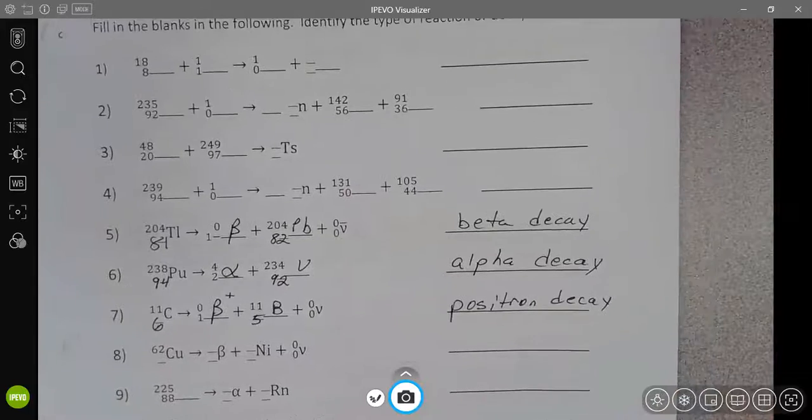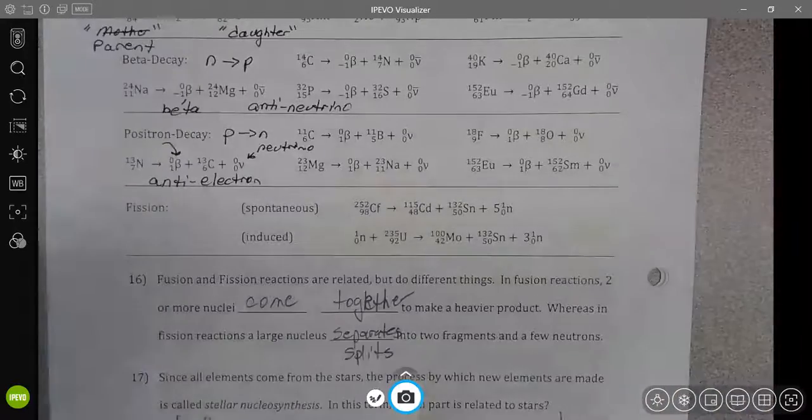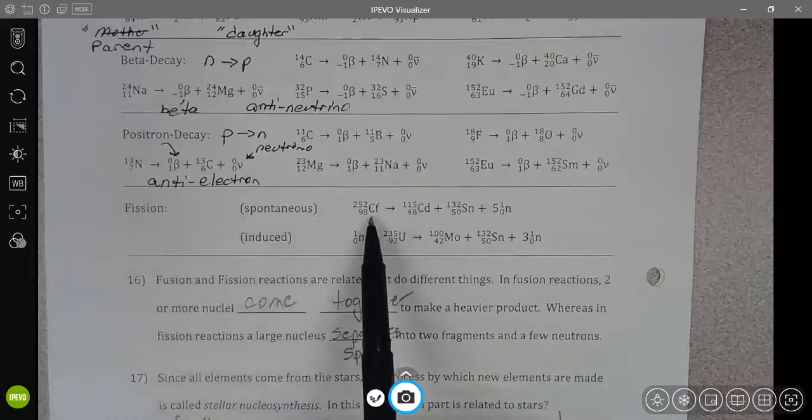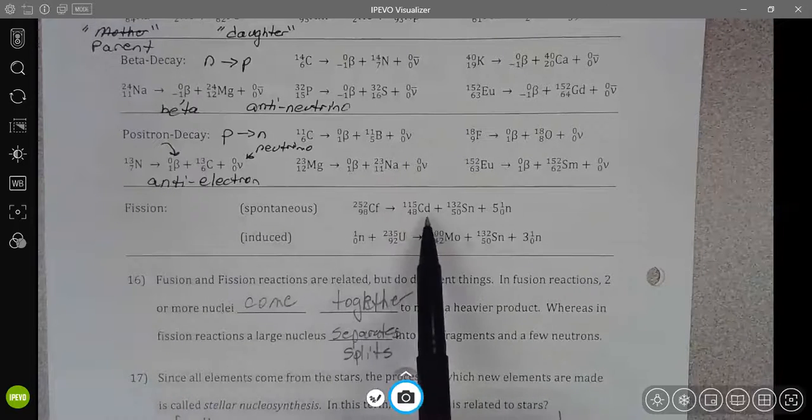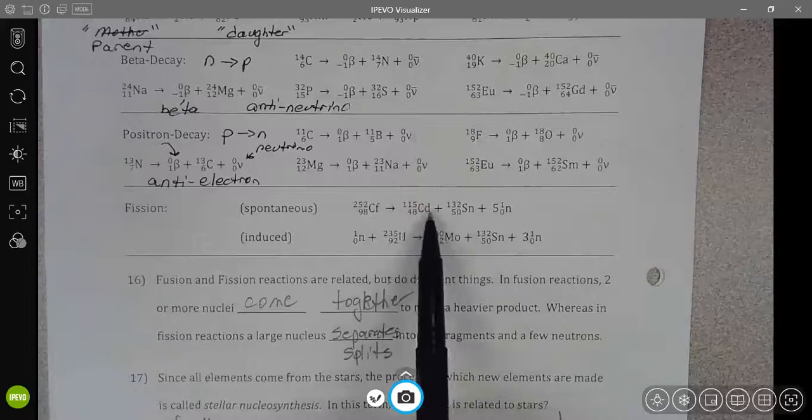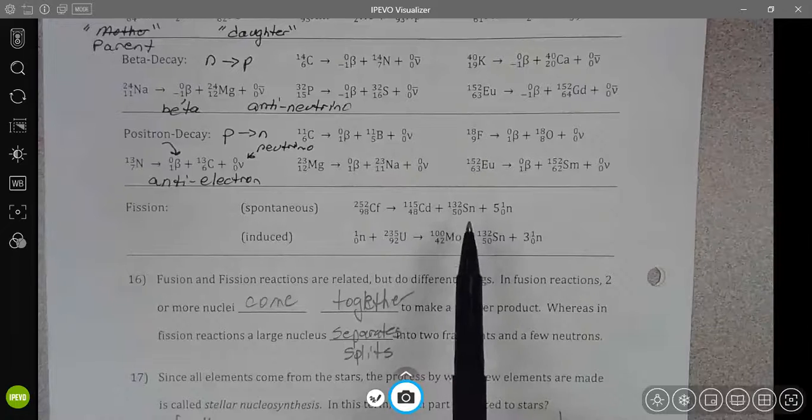On here, you also want to look and you want to make sure you can identify the fission and fusion reactions. So remember that fission is always going to be one big thing splitting up into two halves. Those halves are normally somewhere around 90 and 120, 130, 140.